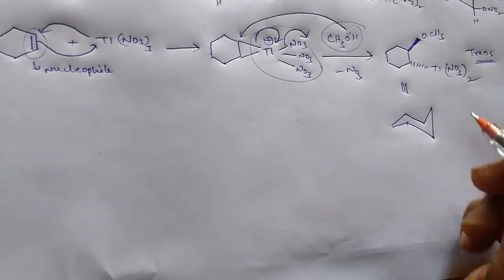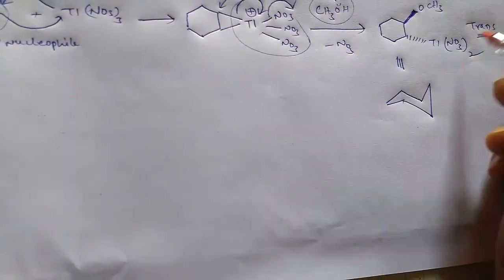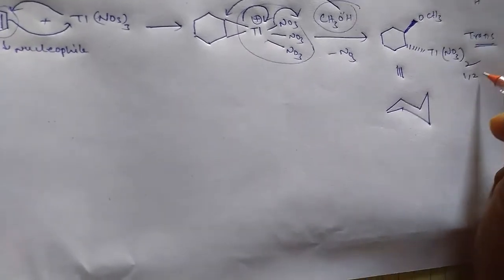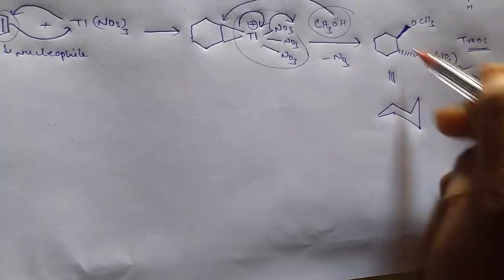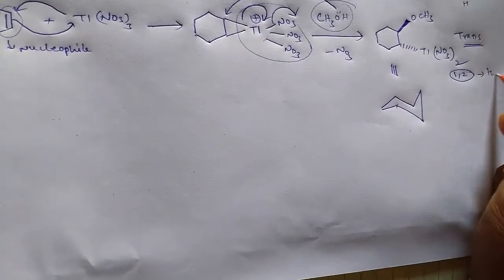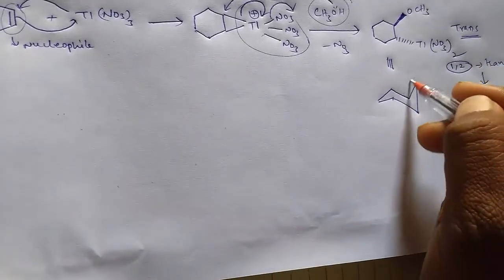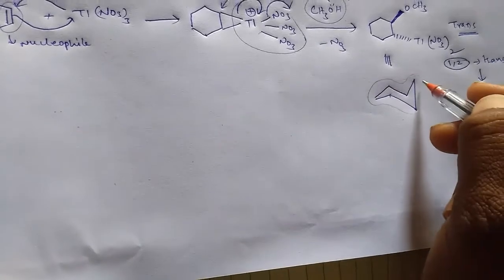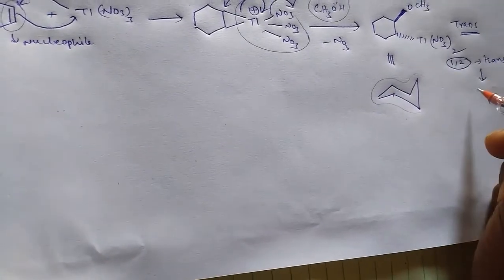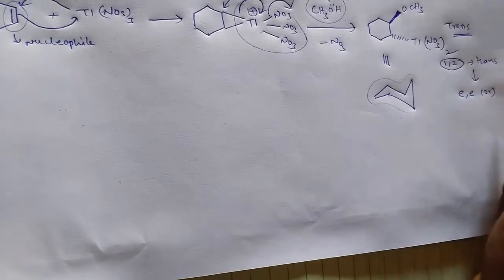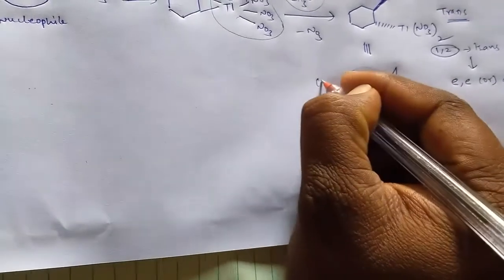In its chair conformation, we know that one comma two substituted trans compounds in chair-like form give equatorial-equatorial or axial-axial conformation. So that means we have two chances here.